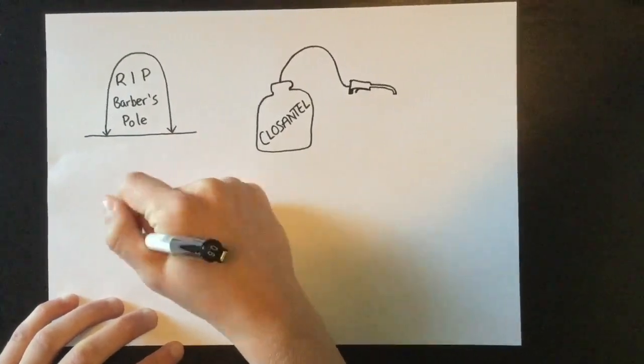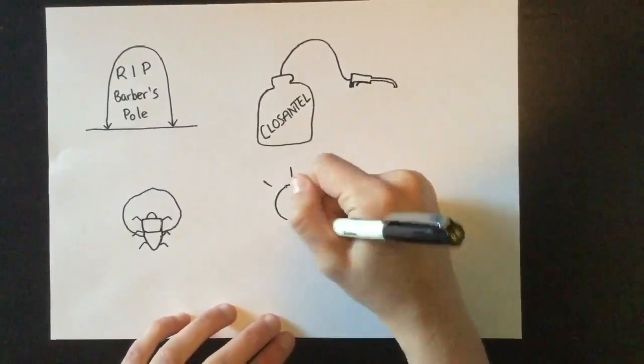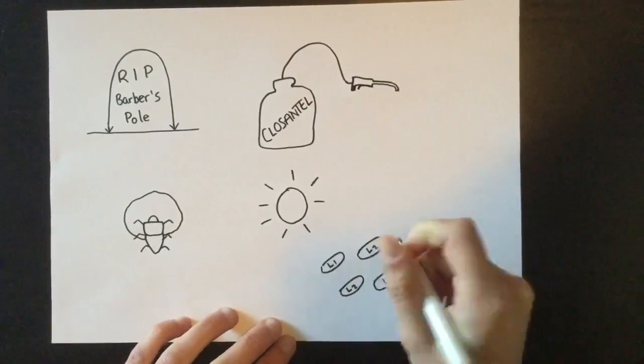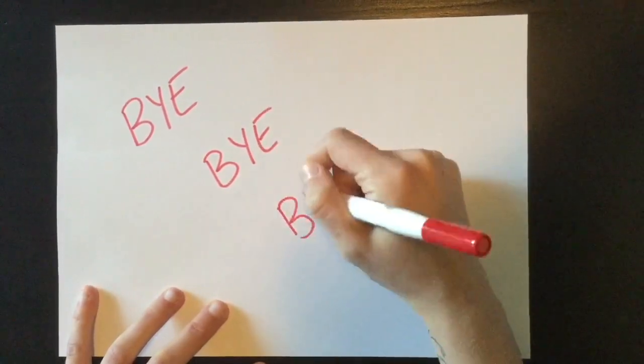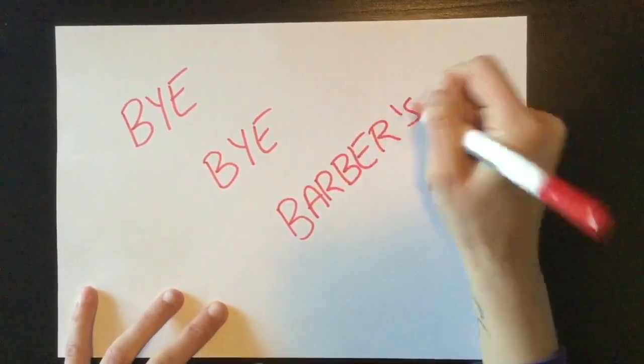He is also teaching the farmer to use dung beetles to expose the L1 and L2 stages to light so they dry out and die. He talked about using rotational pasture management so other worms don't even get to be eaten. If he keeps this up, my descendants won't be able to thrive in this sheep flock anymore!